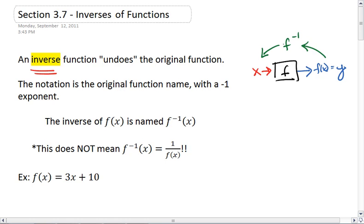The notation, as you see above, is the inverse of f(x) is named f inverse of x, where that inverse is represented by a negative 1 exponent. What's very important to note is that this does not mean f inverse of x equals 1 over f(x).